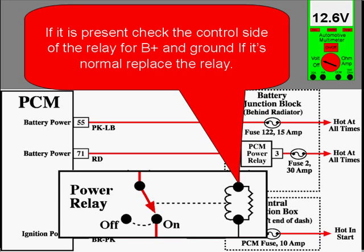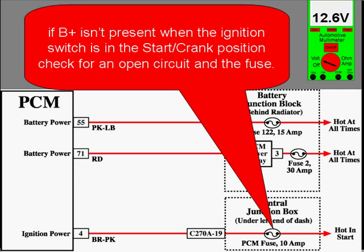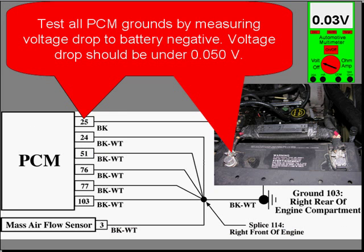If B+ is present at the relay input, check the control side of the power relay for B+ and ground. If it's normal, replace the relay. Pin 4 should be B+ when the ignition switch is in the start or crank position — you can see why you must have a vehicle-specific schematic to do these tests. If B+ isn't present for pin 4 in crank position, check the circuit for an open or replace the fuse. Test all PCM grounds by measuring voltage drop to battery negative.